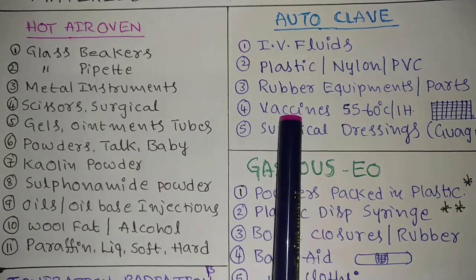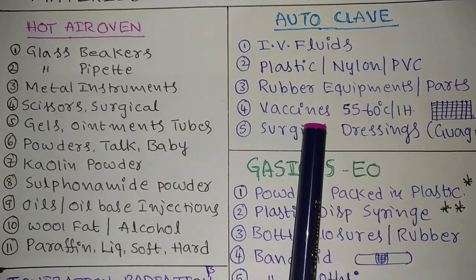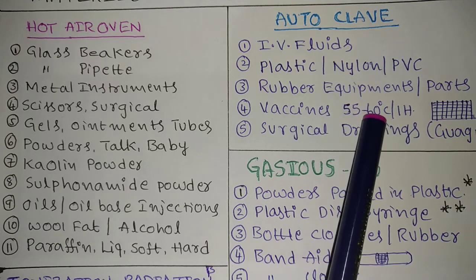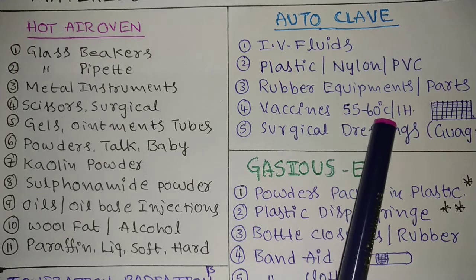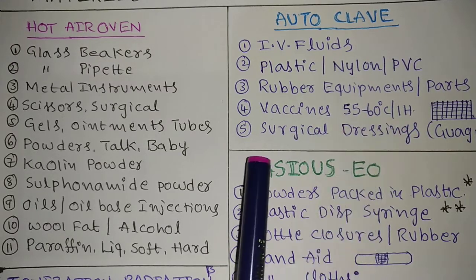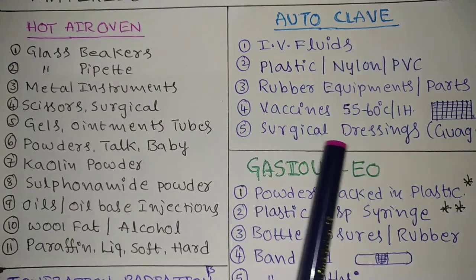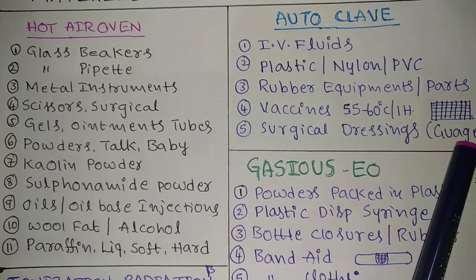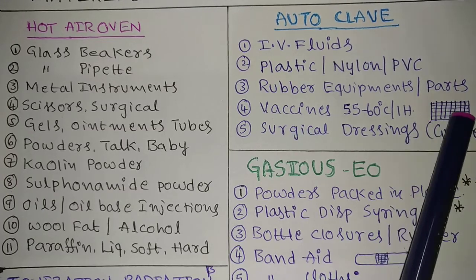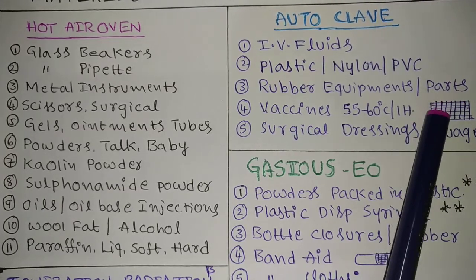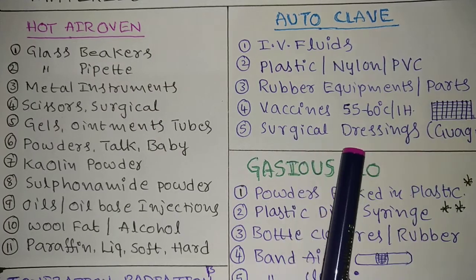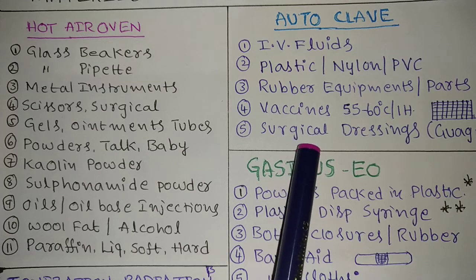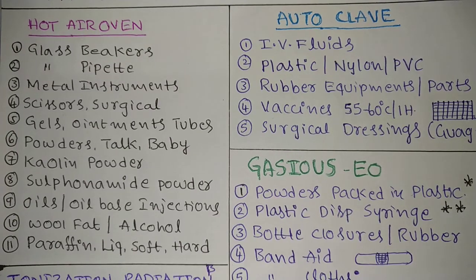Vaccines can go into the autoclave, but the temperature must be only 55 to 60 degrees centigrade for one hour — this has also appeared in old question papers. Next is surgical dressings, like gauze — a cross-netted cloth bandage. For surgical dressings, prefer the autoclave.